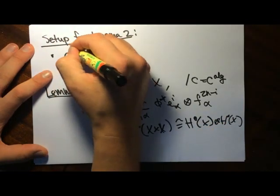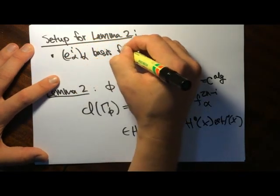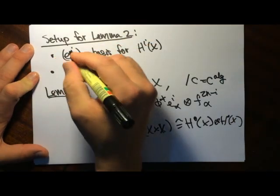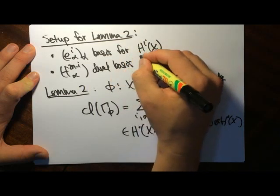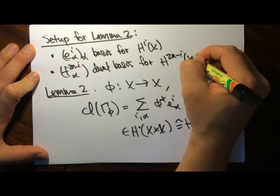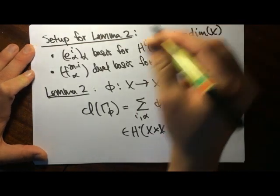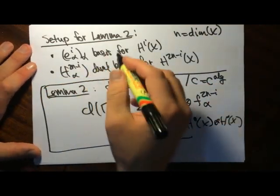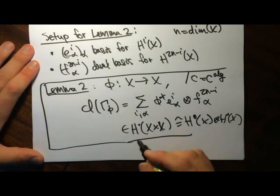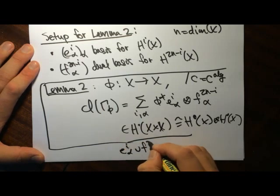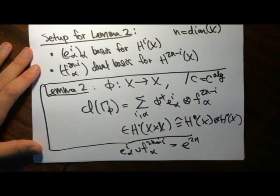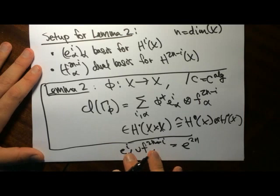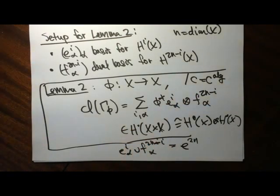The notation: e_i alpha is a basis for H^i of X, and f_{2n-i} of alpha is the dual basis for H^{2n-i} of X, where n is the dimension of X. The important pairing is that e_i alpha cupped with f_{2n-i} alpha gives the top class — it's one-dimensional. When we pair two of them, we need them to match the right way — so e_i beta cupped with f_{2n-j} beta is zero when i is not equal to j, or alpha is not equal to beta.